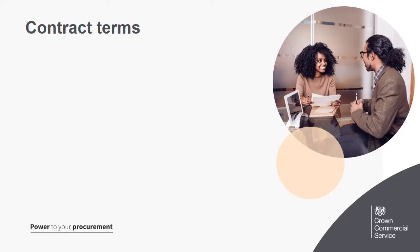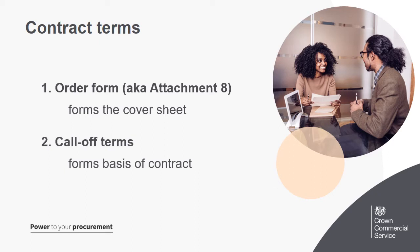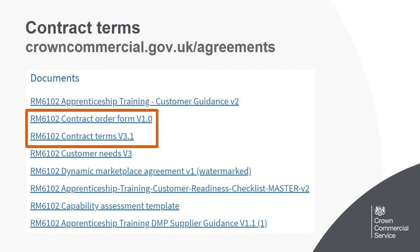There are two documents to download and review which make up the contract terms. The order form is the cover sheet of the contract where you include details like contract details, buyer and supplier details, learner numbers, and price. The DPS call-off terms form the basis of the contract. Address any highlighted text in each document before sending to the supplier to sign. You can download these from the system or go to the CCS website, search for the relevant commercial agreement, and download the order form and contract terms from the document section.